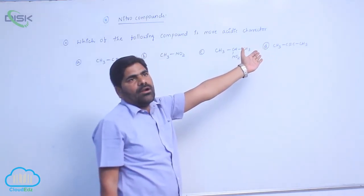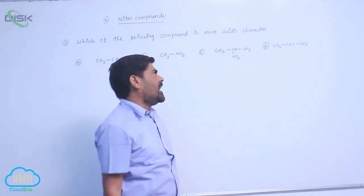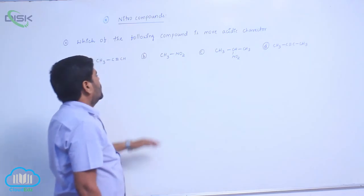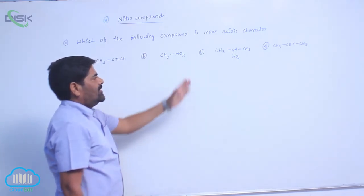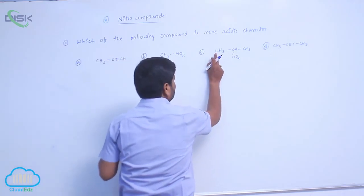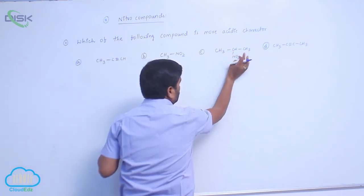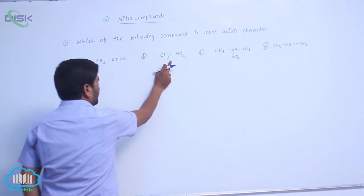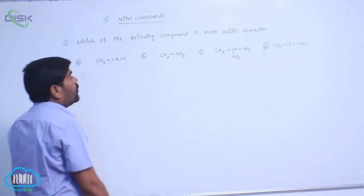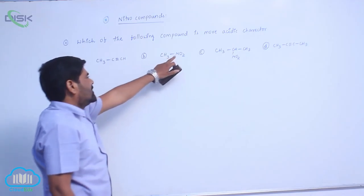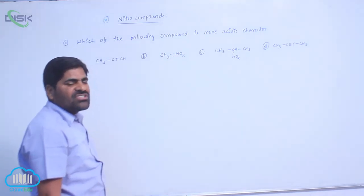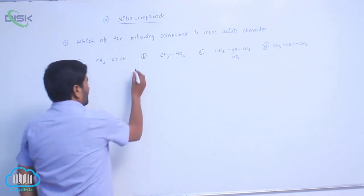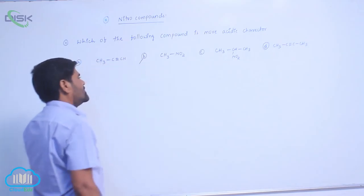Internal alkynes cannot possess acidic character, so option D is eliminated. Option C is 2-nitropropane — a secondary nitro compound where the alkyl group is electron-releasing, so acidic nature decreases. Between A (terminal alkyne) and B (nitromethane), nitromethane is more acidic because the nitro group acts as a stronger electron-withdrawing group. So the answer is B.